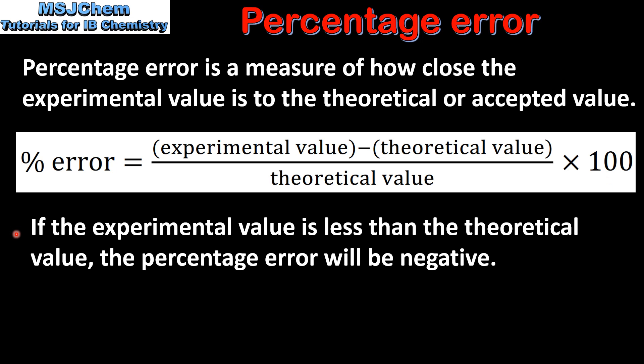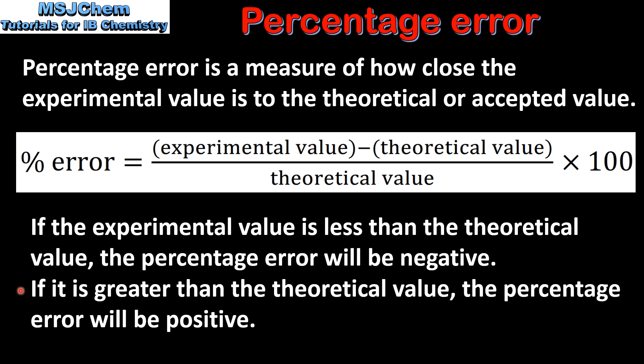If the experimental value is less than the theoretical value, the percentage error will be negative. If it is greater than the theoretical value, the percentage error will be positive.